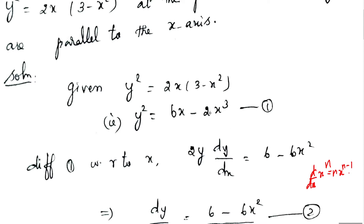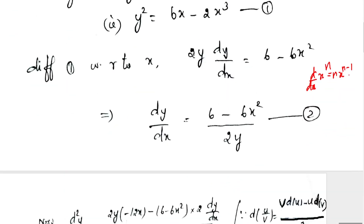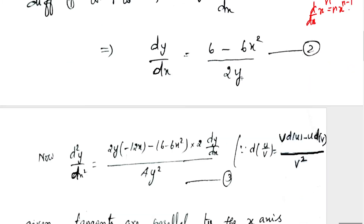Then minus 2 into x³, differentiating with respect to x using the power rule. This gives the value of dy/dx. Squaring and rearranging, the right side involves a ratio where both numerator and denominator are variable.